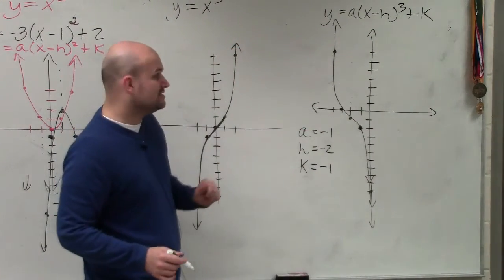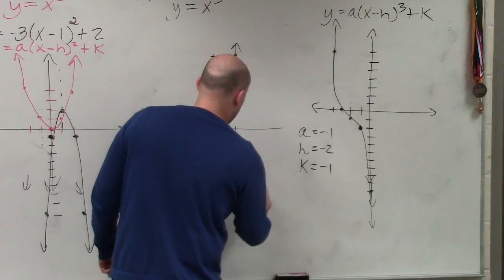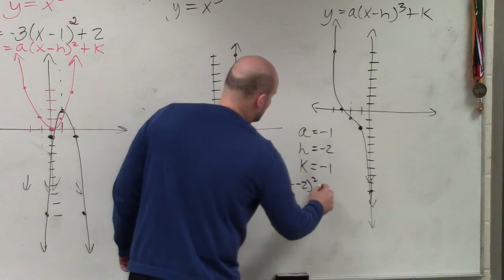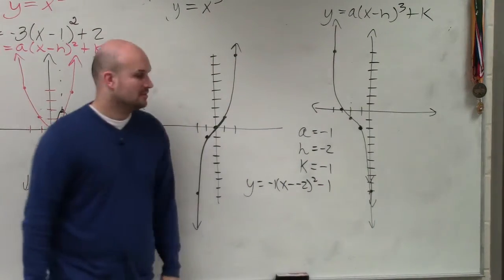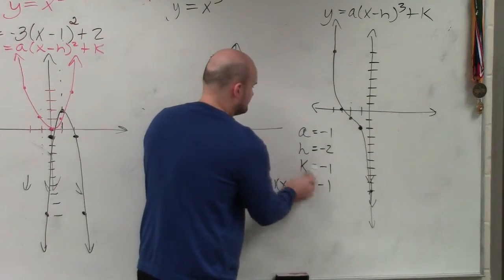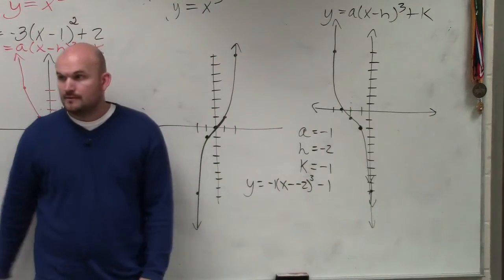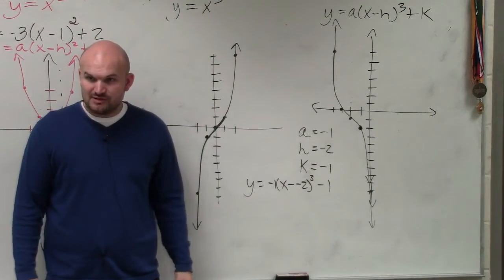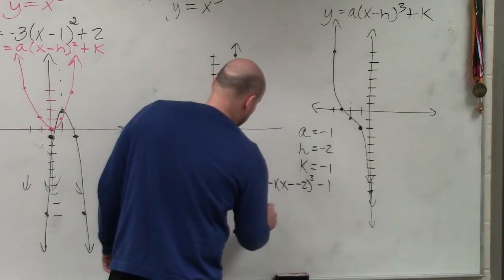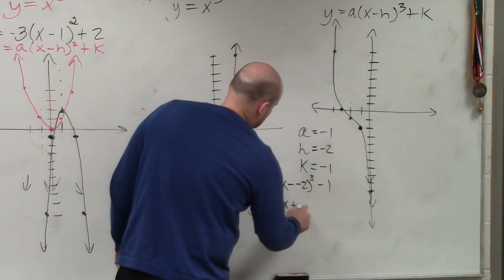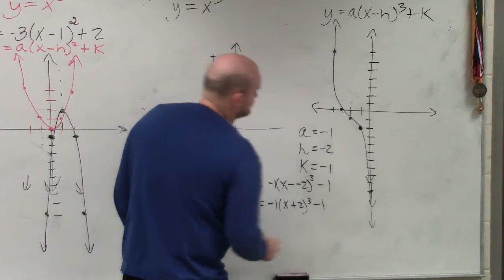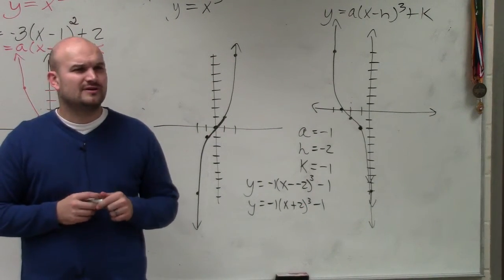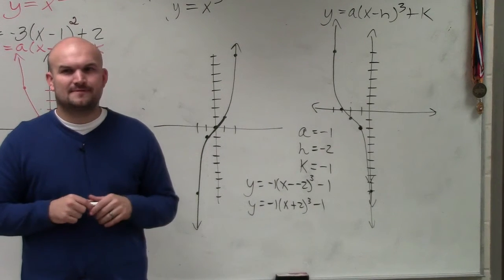So if you were to plug these into the equation, it would look like this. Y equals negative 1, x minus negative 2, minus 1 cubed. Hold on. x minus a negative 2 is what? x plus 2. Does that kind of understand why it's like that opposite thing? Yes?